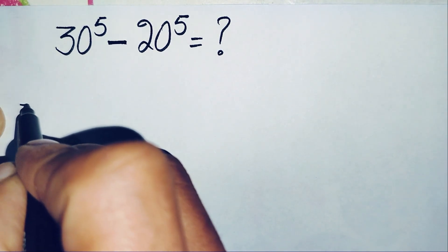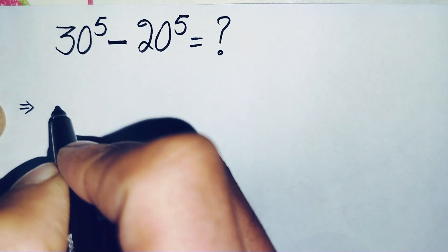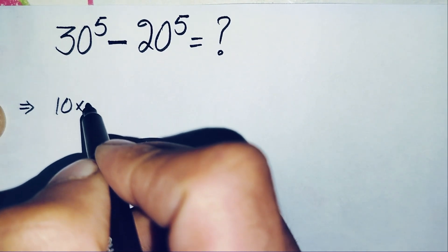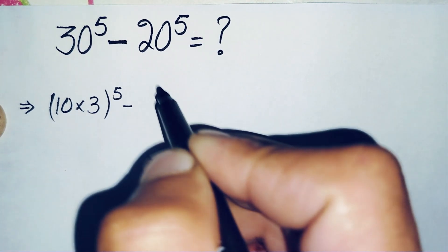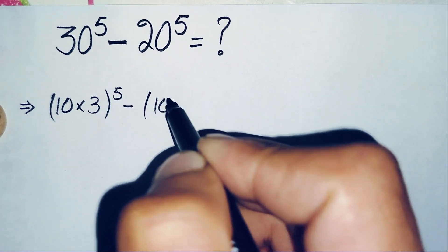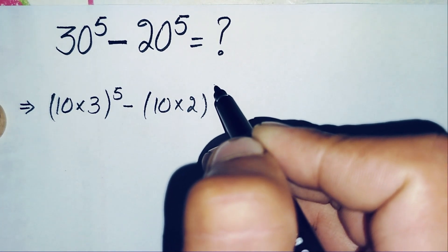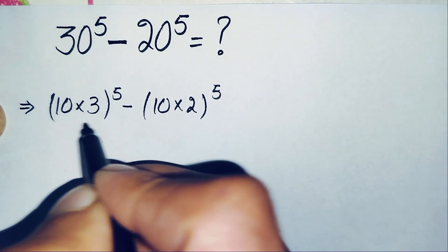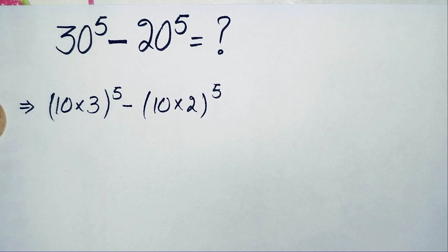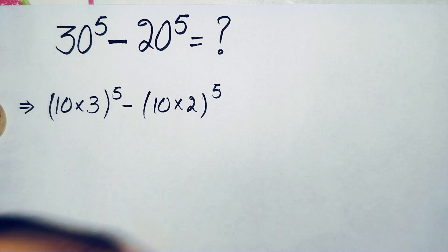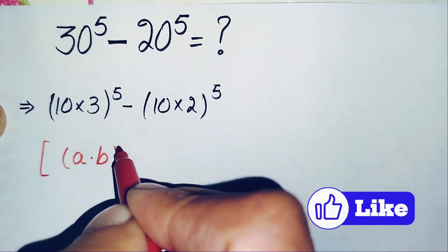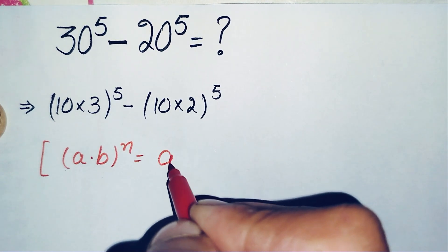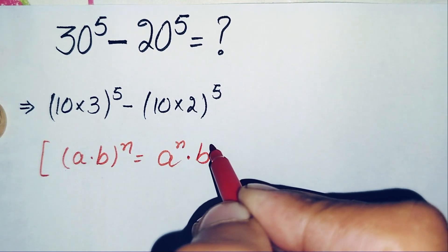We can write 30 as 10 times 3, so 30 raised to power 5, and we can write 20 as 10 times 2, so 20 raised to power 5. In these two terms, we will use the exponent math property: we can write (a times b) all raised to power n as a raised to power n times b raised to power n.